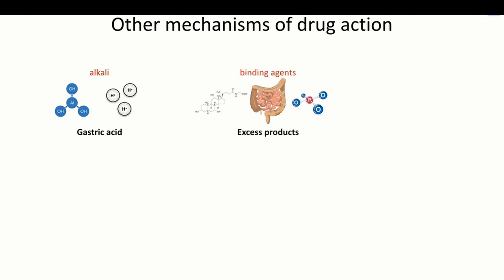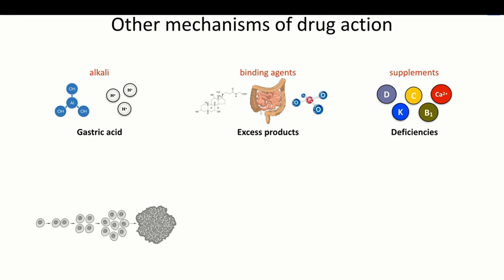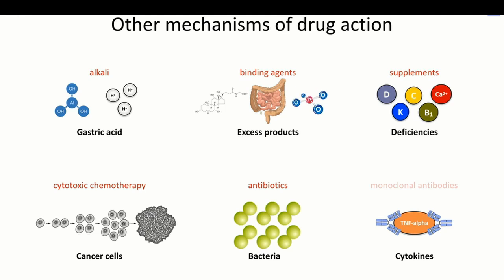In addition to these non-receptor targets of drug action, there are of course many other mechanisms of drug action that are used in modern therapeutics. Here are just some examples: the use of simple alkalis to neutralize gastric acid in peptic ulcer disease; the use of binding agents to remove unwanted substances such as bile salts, phosphate, or poisons from the gut; the use of vitamins and other supplements to replace deficiencies; the use of chemotherapeutic agents to kill malignant cells in a variety of cancers; the use of antibiotics to kill bacteria in a variety of infections; and finally, the use of monoclonal antibodies in signaling molecules in chronic inflammatory or immunological diseases.